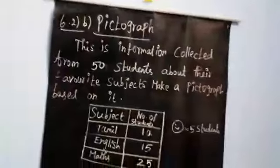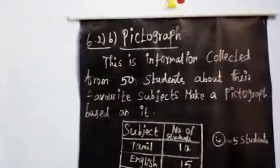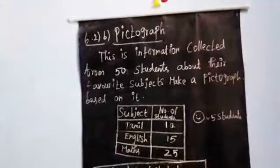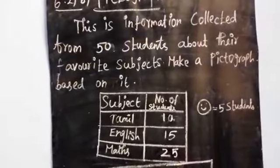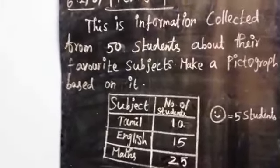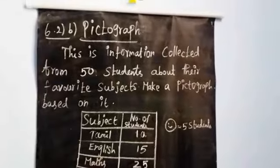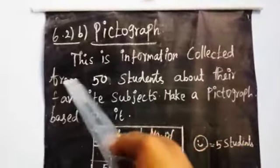The second type is pictograph. Pictograph means it is a representation of data using pictures. The pictograph represents the frequency of data while using simple symbols or images. Look at the example: this is information collected from 50 students about their favorite subject.